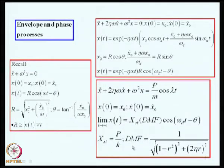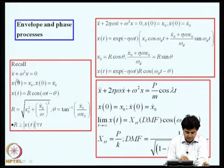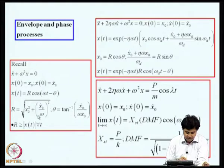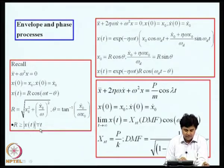I also talked briefly about the notion of envelope and phase processes during the last lecture. We considered, for example, an undamped free vibration of a single degree of freedom system. The equation of motion is X-double-dot plus omega-squared X equals 0, and if the system starts from initial conditions X-naught and X-naught-dot, we can write the solution as X(t) = R cos(omega*t - theta), where R is the amplitude and is a function of the initial conditions and natural frequency. The phase angle theta is also a function of initial conditions and natural frequency. R has the property that it is greater than or equal to the modulus of X(t) for all t, and this is called the envelope of X(t).